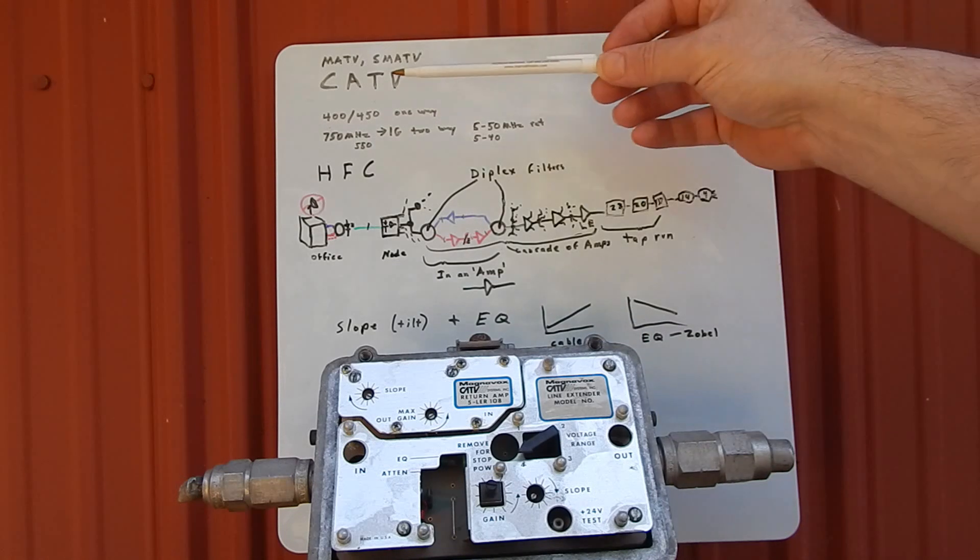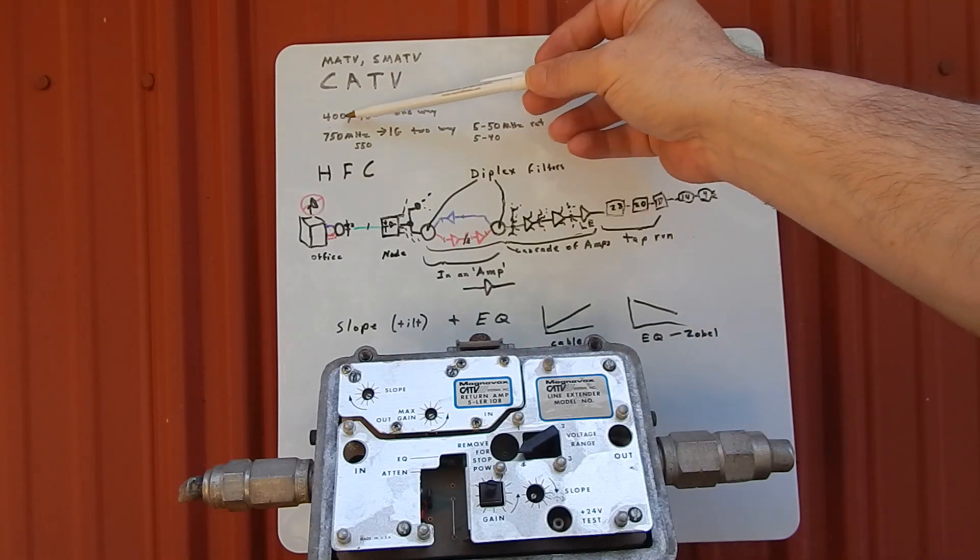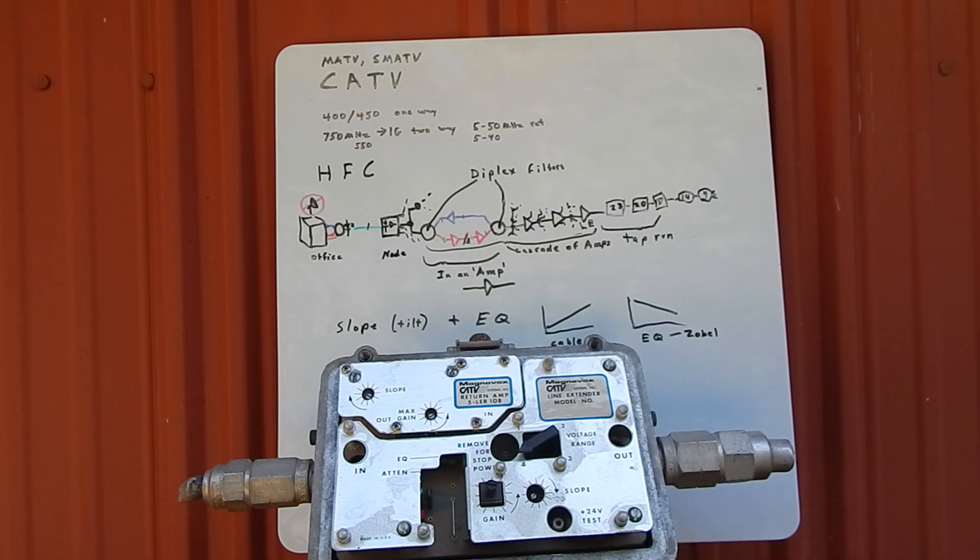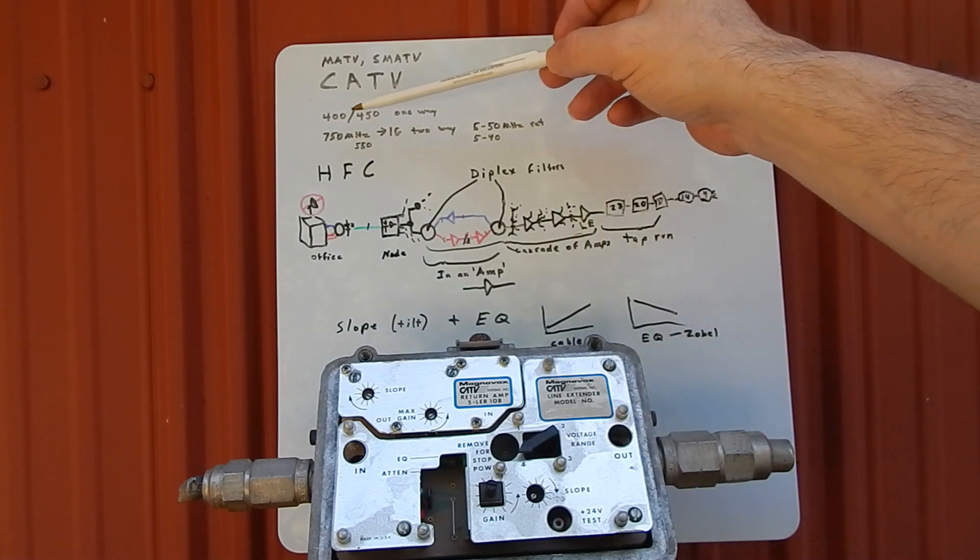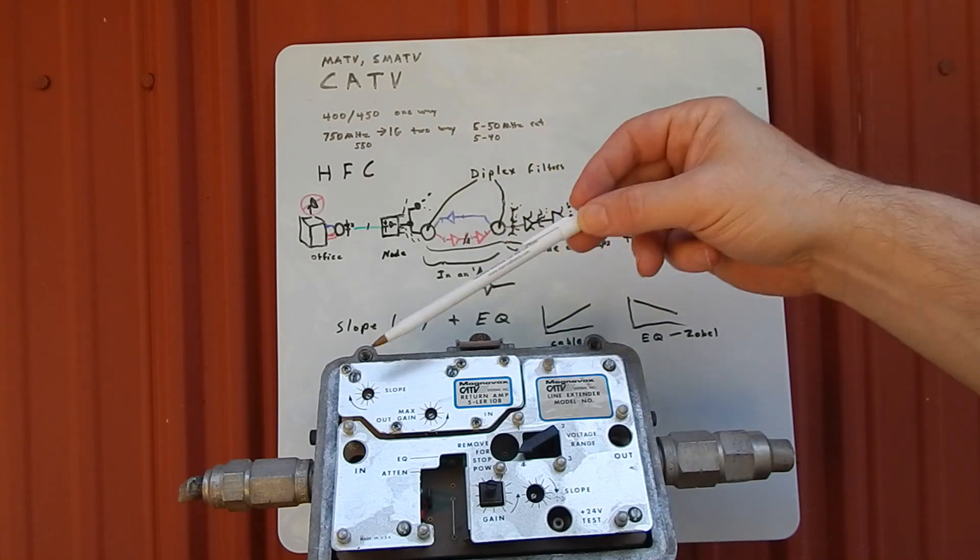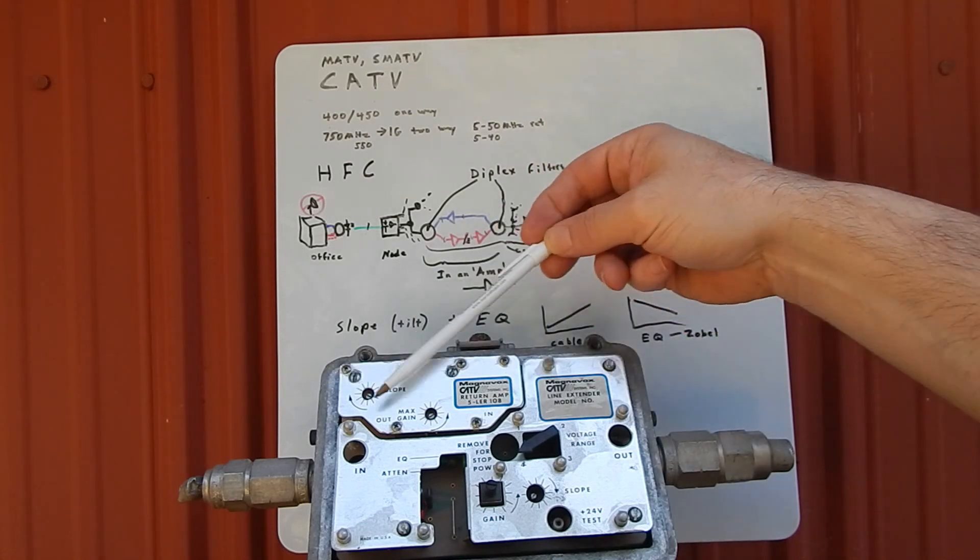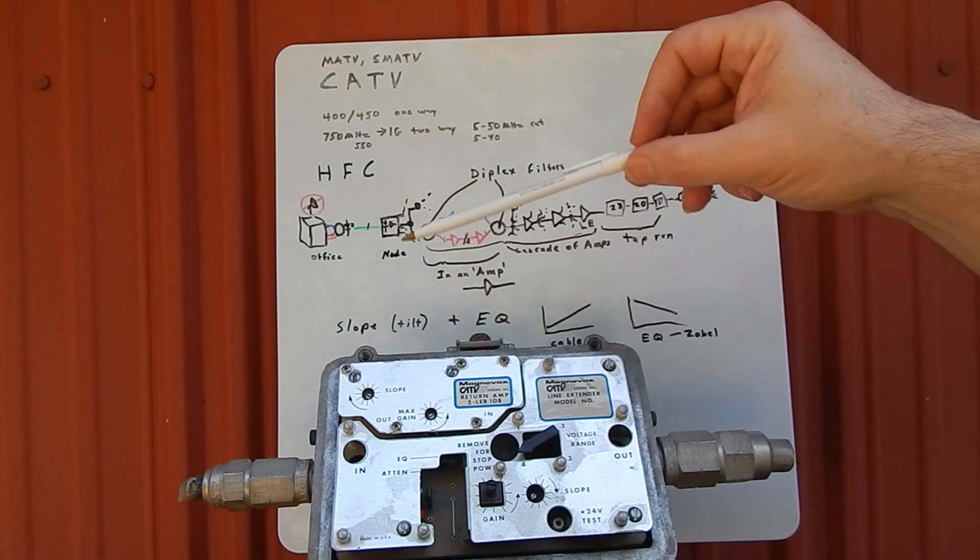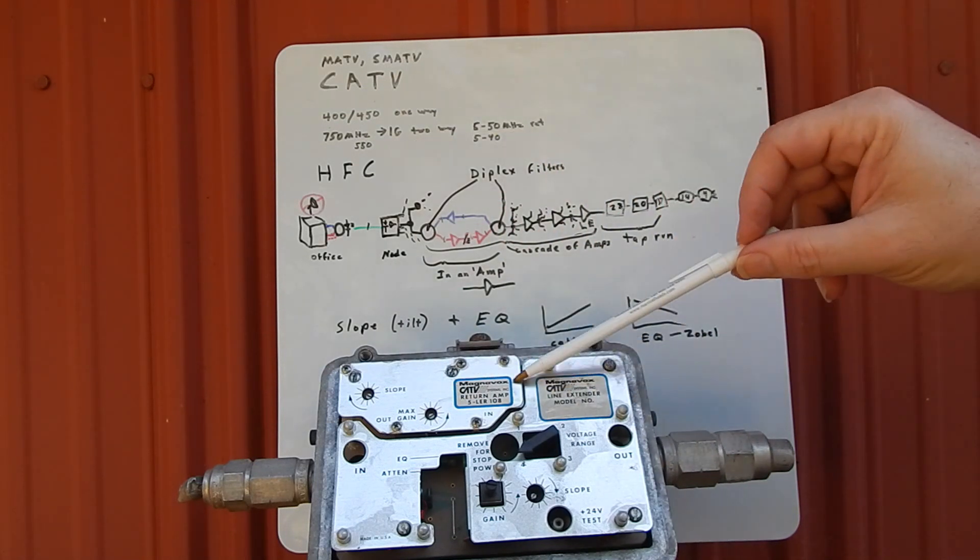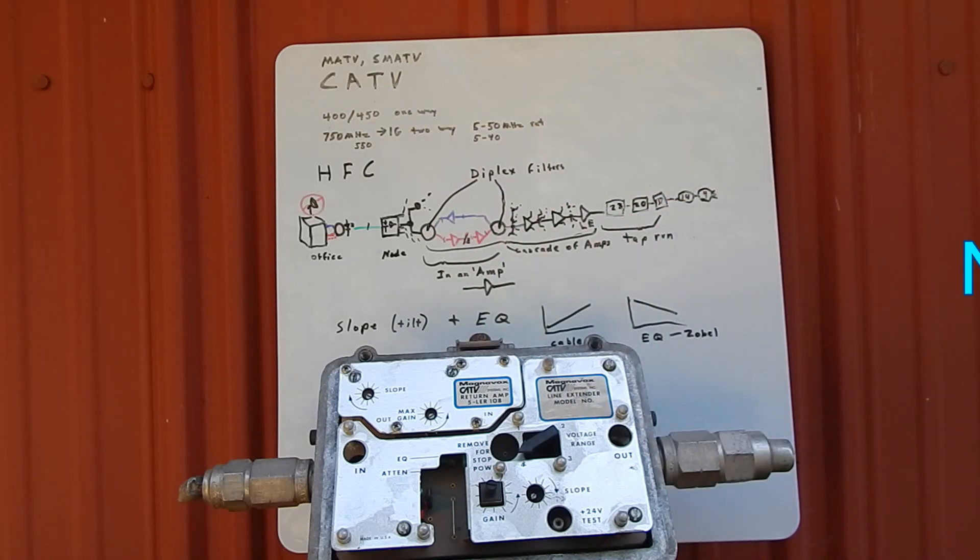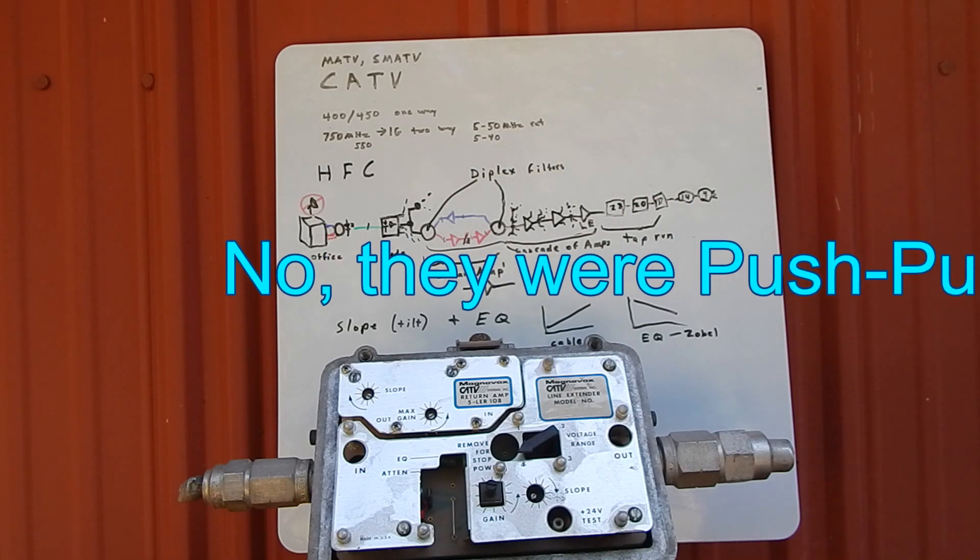When I started in the business, 400 megahertz equipment like this guy here—a real antique, probably 30-year-old—except ours didn't even have return amps in them. We were a one-way system. This module wasn't even installed. Then we had some gear with gold labels and blue labels, and that stuff was 450 megahertz. Then they came up with power doubling.